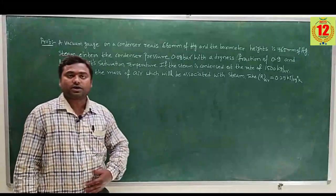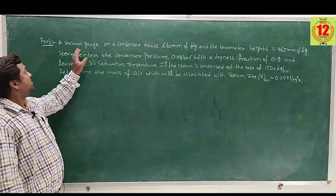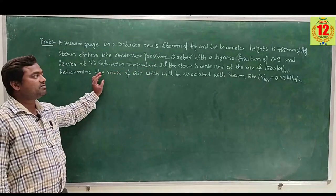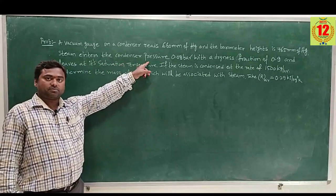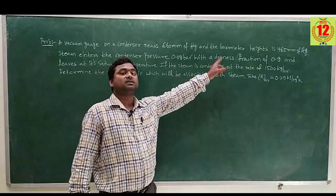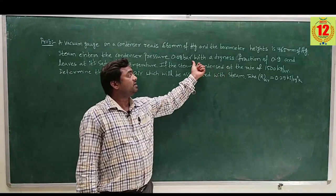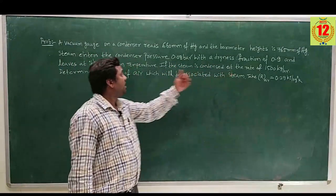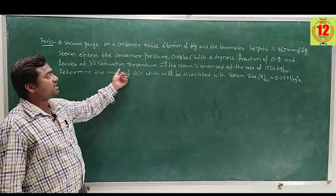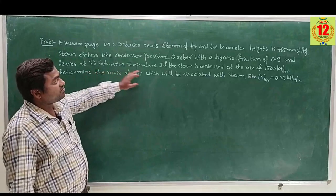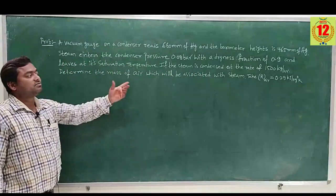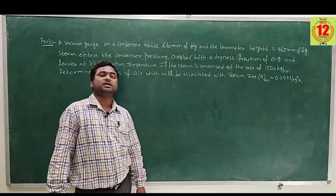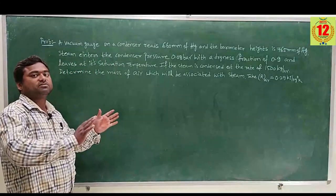Let us go for another problem. A vacuum gauge on a condenser reads 660 mm of Hg and the barometer height is 765 mm of Hg. The steam enters at a pressure of 0.08 bar with dryness fraction 0.9, and the steam leaves at its saturation temperature. If the steam is condensed at the rate of 1500 kg per hour, determine the mass of air. R is given as 0.29 kJ per kg degree Kelvin.